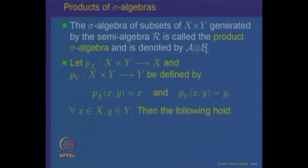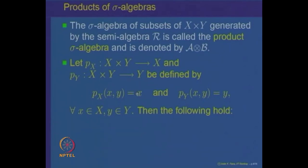Let us give another characterization of the product sigma algebra in terms of what are called the projection maps. We look at the map P_X defined from X×Y to X as P_X(x,y) = x, the first coordinate, and similarly P_Y is a map from X×Y to Y defined as P_Y(x,y) = y, the second coordinate. These are called the projection maps of X×Y onto X and onto Y. The claim is that if we give X×Y the product sigma algebra, then these are measurable maps.